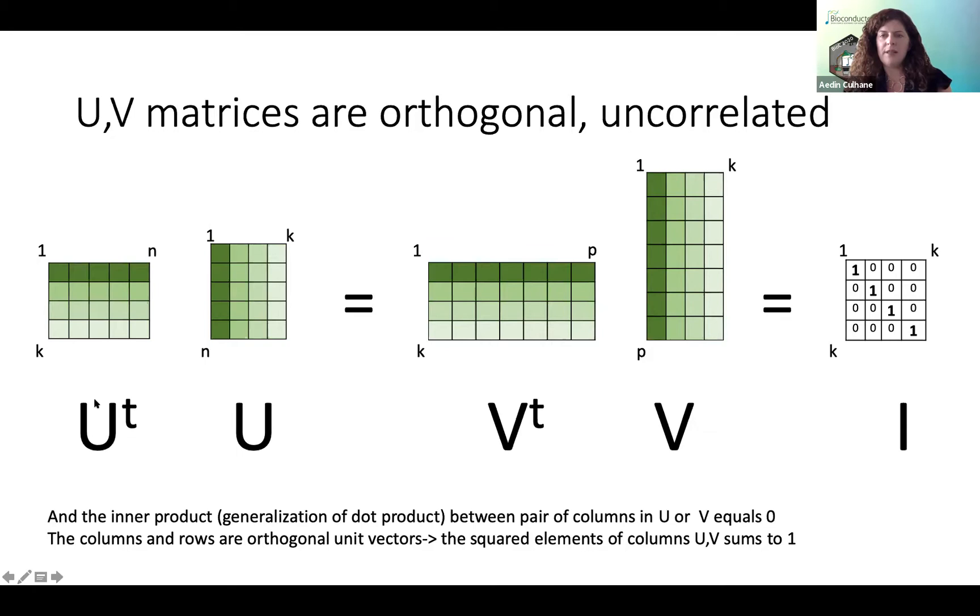And V and U are both orthogonal matrices. Now, within an orthogonal matrix, if you actually take any pair of columns and take the dot product between those, you get zero. And the squared elements sum to one. So these are really nice properties. And also, if you take the sum of the squares of the matrix, you actually get the sum of the squares of the eigenvalues. So there's some really nice properties here that allow us then to use this for some very nice approaches.